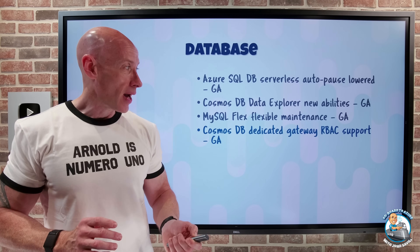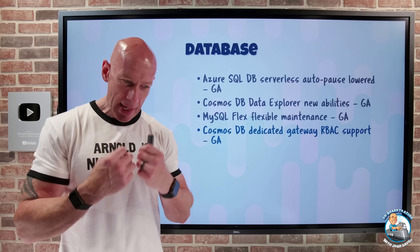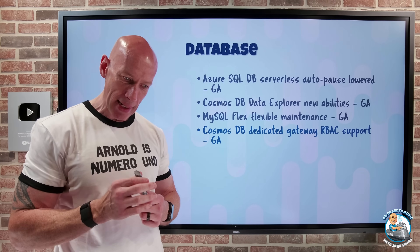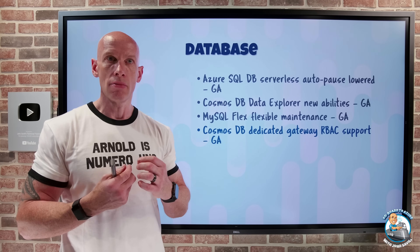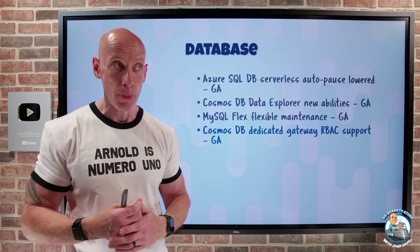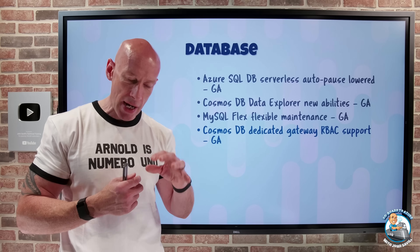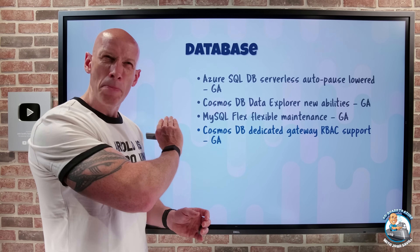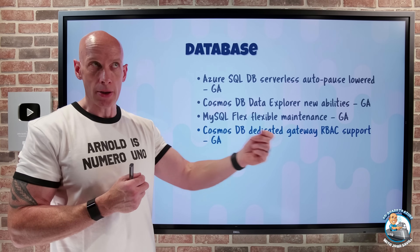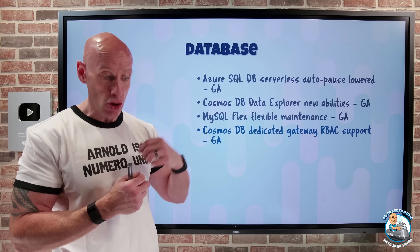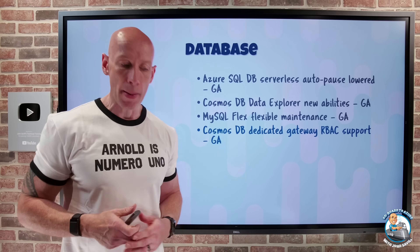Cosmos DB Dedicated Gateway now has role-based access control support. Ordinarily, you use the primary key of the database to authenticate to the dedicated gateway, which means no granular controls. Now it's Entra integrated — you can use an Entra account, for example a managed identity. And you can configure the specific operations you want it to be able to perform, mapping to the database operations like create item or read item. So now you have that more granularity and you don't have to use that primary key.